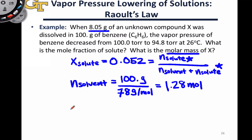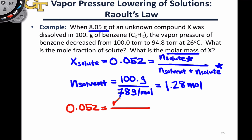From here, switching to red because it's all math: the mole fraction of the solute — which was the 0.052 we found earlier from the vapor pressure lowering effect — is equal to our unknown number of moles of solute, abbreviated as n, divided by the number of moles of solvent, 1.28, plus n, the moles of solute.